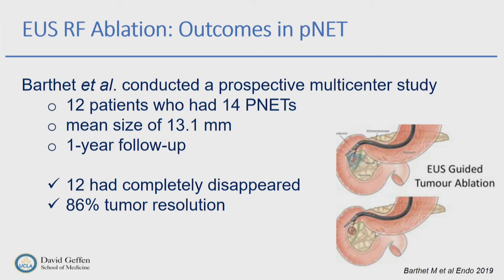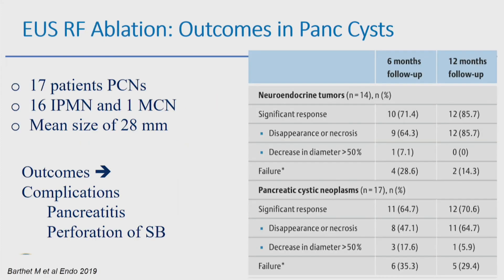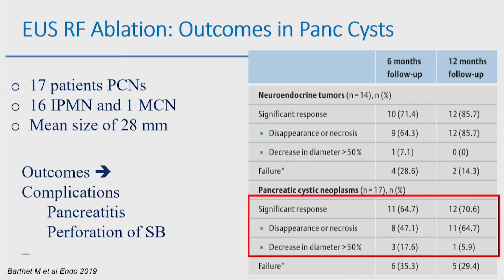Another multicenter prospective study looked at neuroendocrine tumors and pancreatic cysts with a one-year follow-up. In 12 patients with neuroendocrine tumors, 12 tumors resolved, corresponding to an 86% success rate. For 17 patients with pancreatic cysts, there was approximately 71% significant response at one-year follow-up. However, one patient developed small bowel perforation after RFA, and the protocol was modified afterward with fewer side effects following that change.